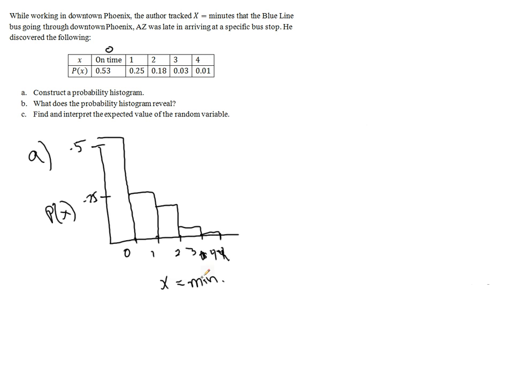Here's a probability histogram. We're looking at the minutes that it's late versus the probability for that particular number of minutes being late. So 53% chance that the bus is 0 minutes late, 25% that it's 1 minute late, and so on.